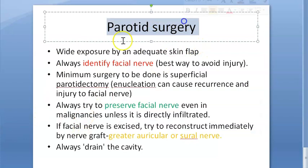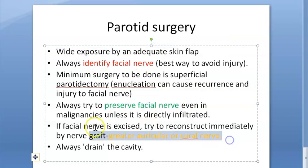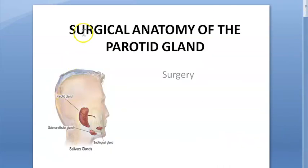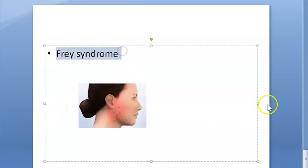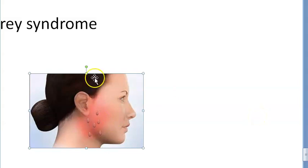During parotid surgery, expose widely, adequately identify the facial nerve, and preserve it whenever possible. If the nerve must be excised, reconstruct immediately with a nerve graft from the great auricular or sural nerve. Always drain the cavity. If parotid surgery is not done properly, it can lead to Bell's palsy. Frey's syndrome can also occur — the patient sweats when eating — due to mixing of the auriculotemporal and great auricular nerves.